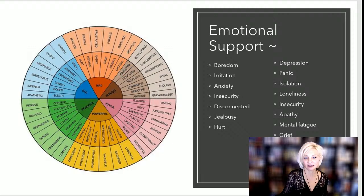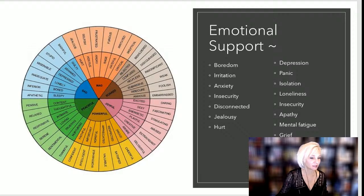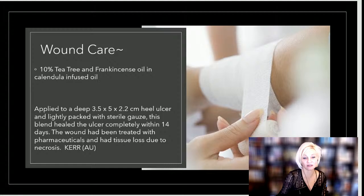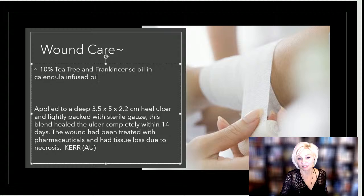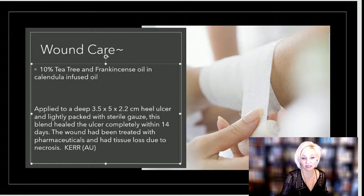We want to make sure we talk about the mental and emotional aspects of what our oils can do. Tea tree at 10% with frankincense at 10% in calendula-infused oil was applied to a deep wound — a decubitus ulcer — lightly packed with gauze. This blend healed the wound completely within 14 days. The wound had been treated with pharmaceuticals and had tissue loss due to necrosis and had not healed. So know that tea tree oil and frankincense can be applied to deep wounds — this is an essential oil that's really safe for deep wound care.